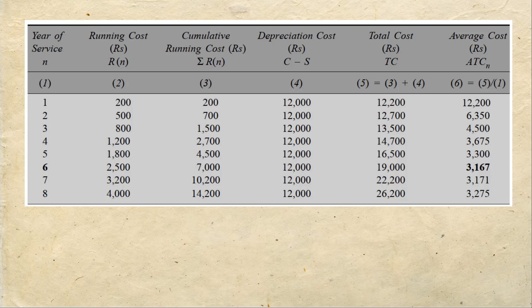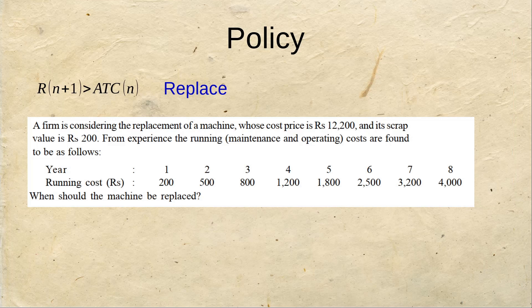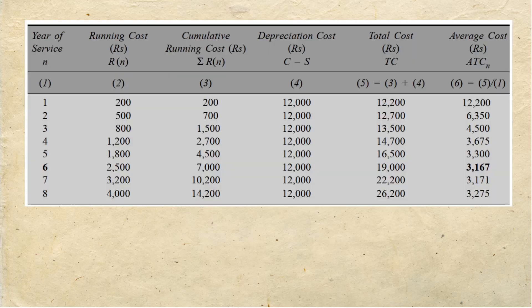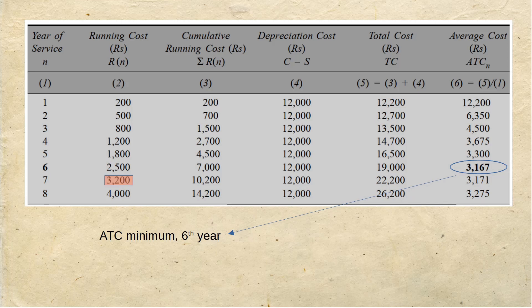What do we find? The running cost in year 7 is higher than the average total cost in year 6. What is the policy we had said? The policy is if the running cost in the subsequent year is greater than the average total cost in a year, then we need to replace it. Therefore, in year 6, at the end of year 6, the machine should be replaced. Considering all the factors, we should be replacing it in year number 6.